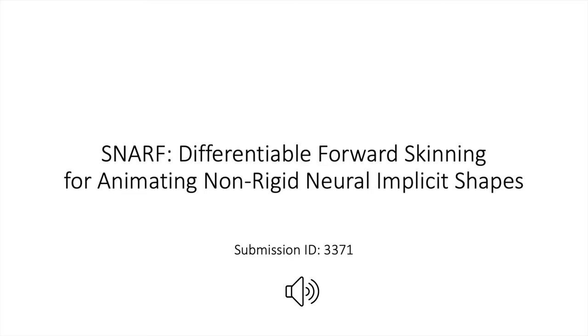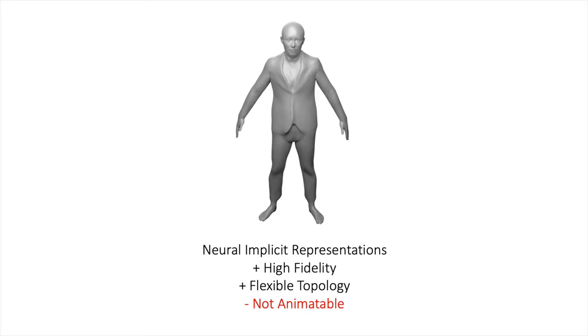We present SNARF, Differentiable Forward Skinning for Animating Non-Rigid Neural Implicit Shapes. Neural implicit representations have emerged as a powerful tool to capture geometry at high fidelity with flexible topology. However, most approaches focus on static scenes only. In this work, we propose to learn a skinning model jointly with the implicit shape, enabling animation of neural implicit avatars.